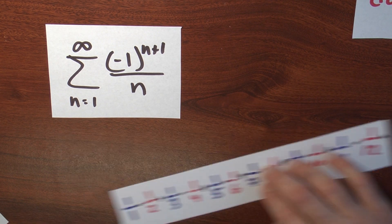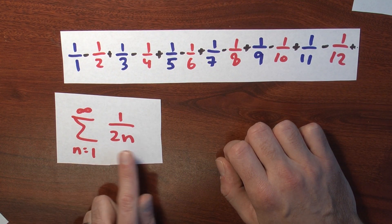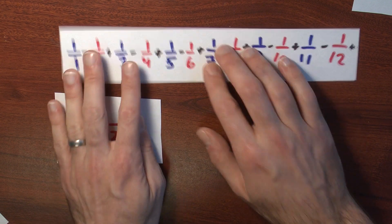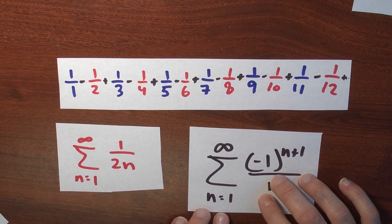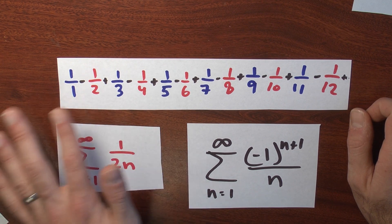Well, in that case, what I'm looking at is the sum n goes from 1 to infinity of 1 over 2n. Right? These are the even index terms from the alternating harmonic series. What do I get if I add up all of these numbers?